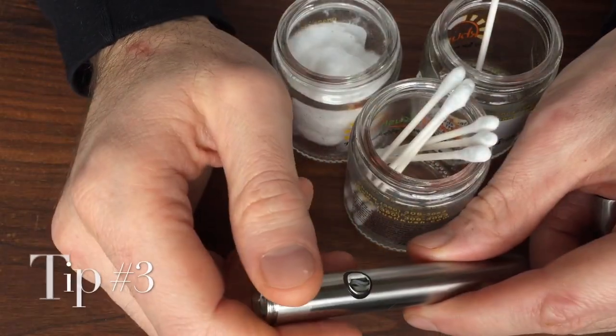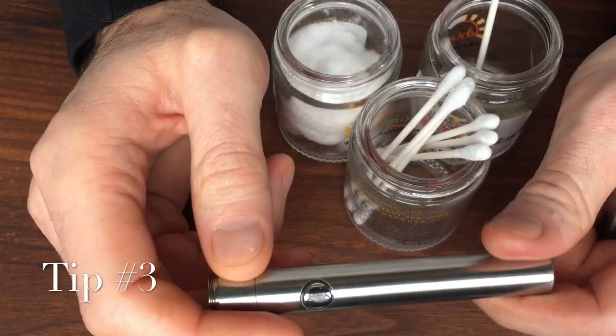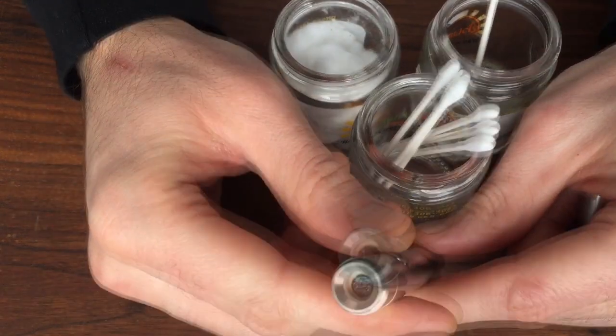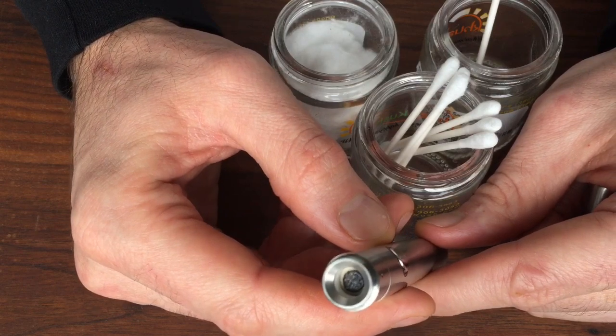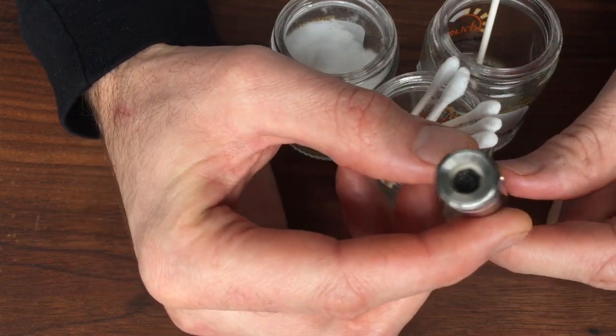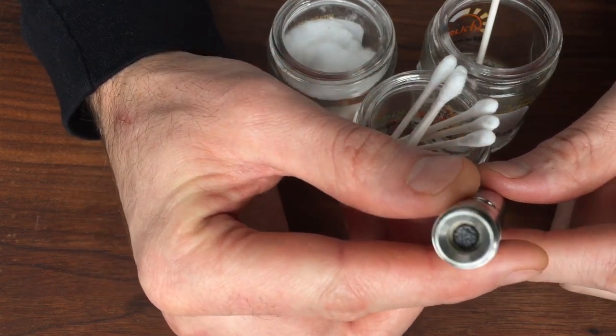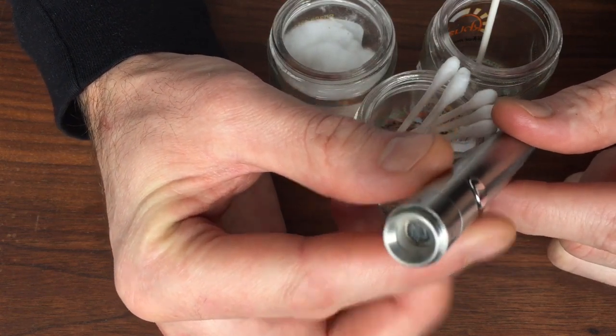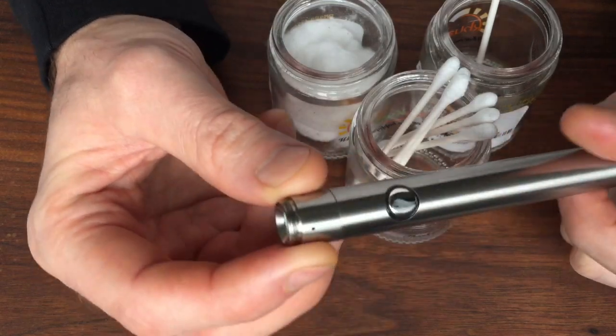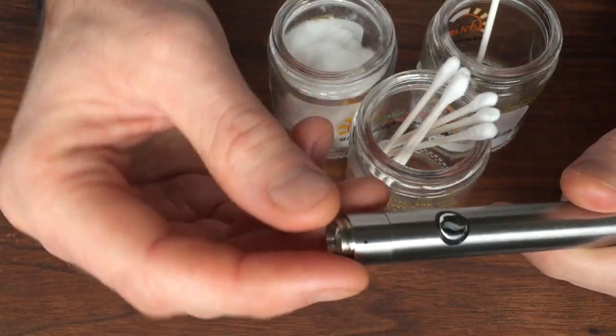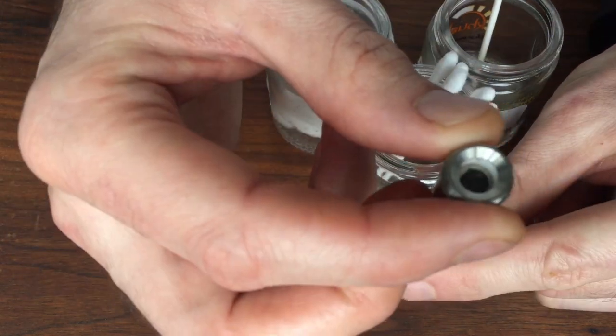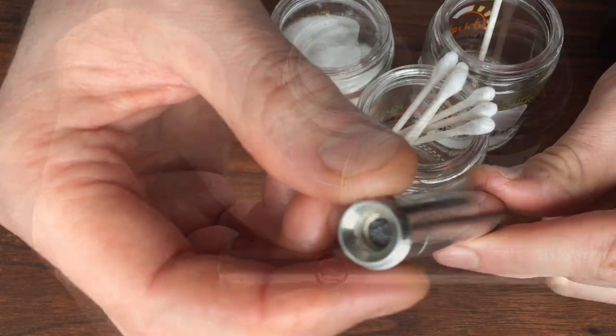Tip number three is make sure you use a high quality CO2 oil. The thinner the oil and the less particles that are in it, the less it's going to cake on. If you use like a hard shatter where there's more waxes, that's going to build up residue quicker. The thinner the oil, the less particles in it, the longer it lasts before it needs to be cleaned.